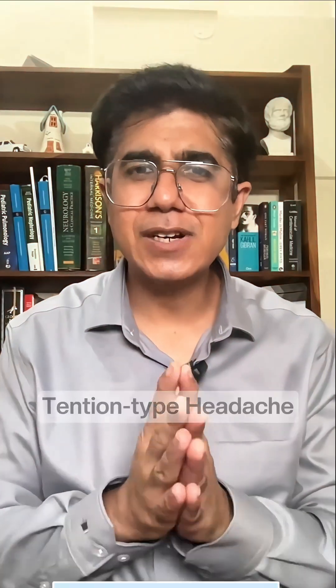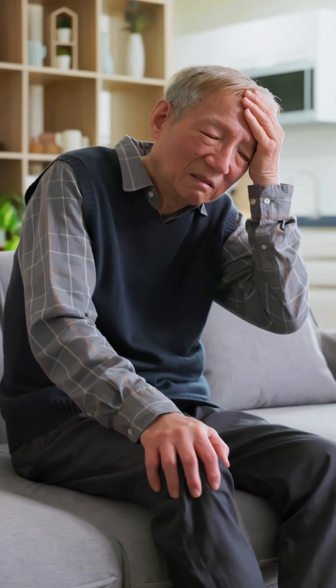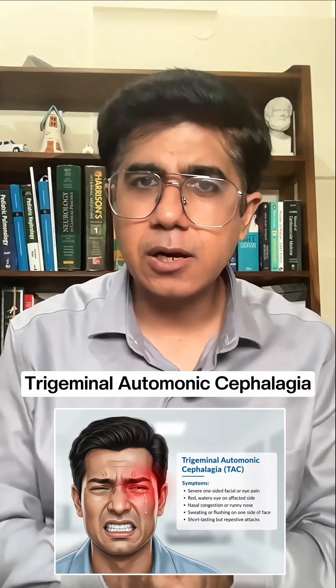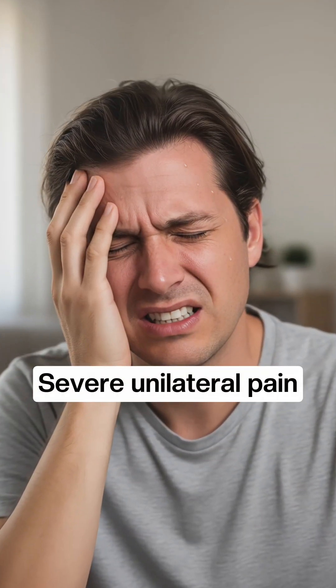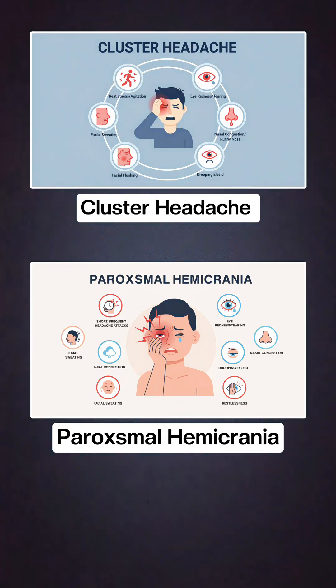Migraine can be episodic or chronic if the frequency is more than 15 per month for more than 3 months duration. Then we have TTH or tension type headache, where the patient has a dull type of headache without any characteristic feature of migraine and lasting usually less than 3 hours. Then we have trigeminal autonomic cephalgia, where the patient has severe unilateral pain associated with autonomic symptoms, and this includes cluster headache and paroxysmal hemicrania.